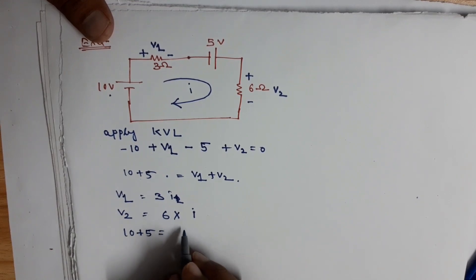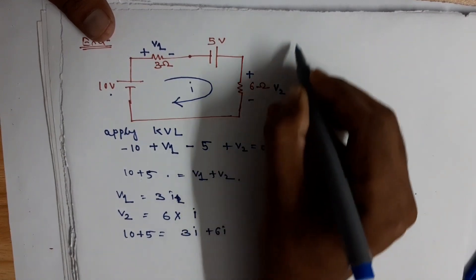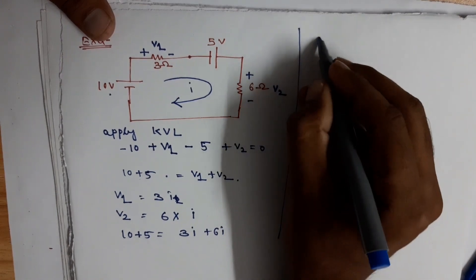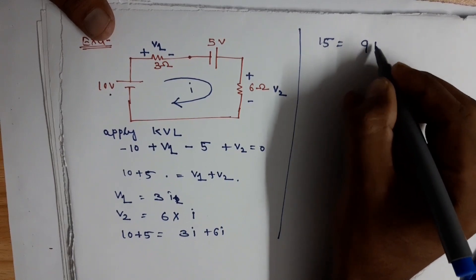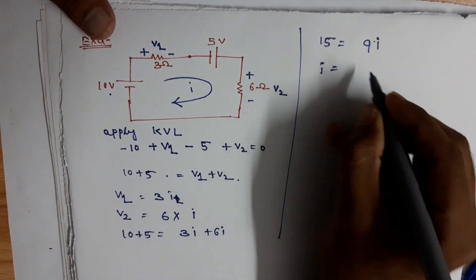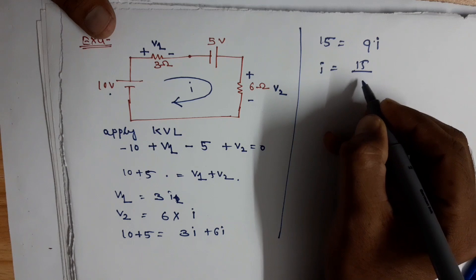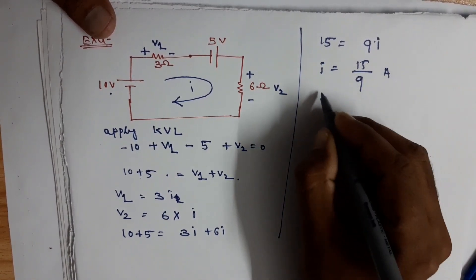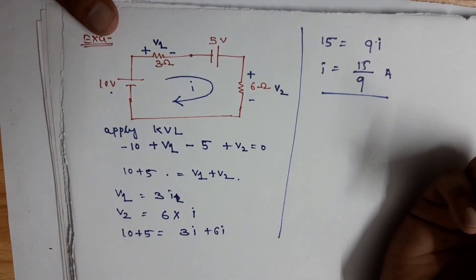Or we can say 10 plus 5 equals V1 plus V2. Since V1 equals 3i and V2 equals 6i, we get 15 equals 3i plus 6i, which gives 15 equals 9i, so i equals 15 over 9 amperes. This is how we find current in a closed circuit using KVL.